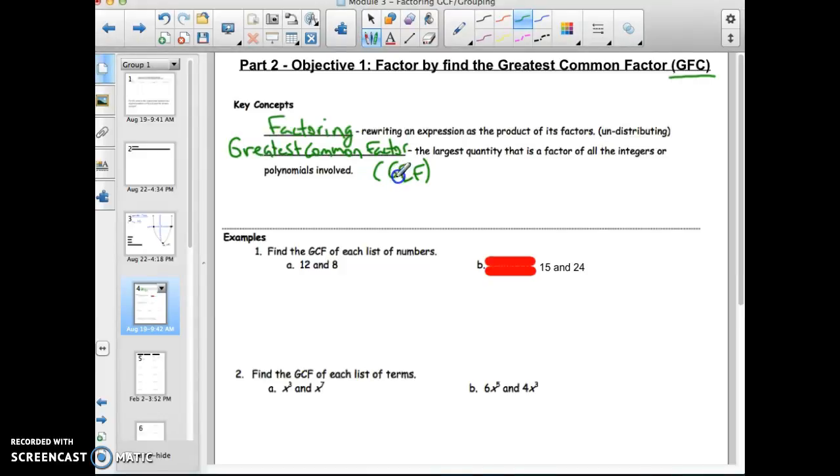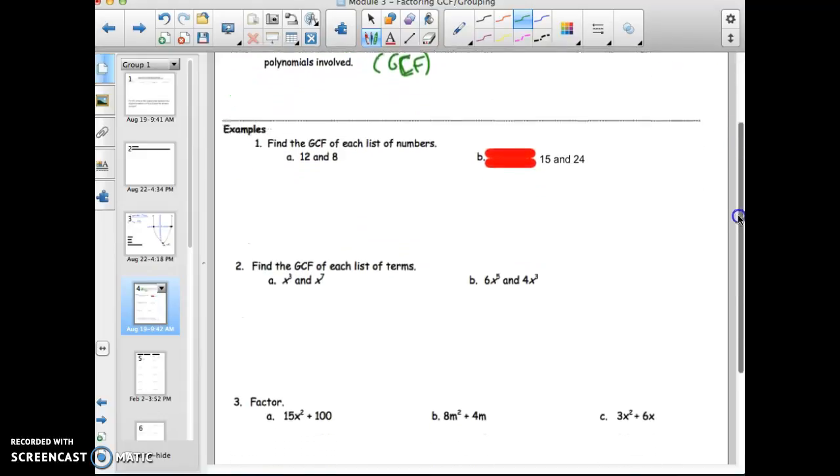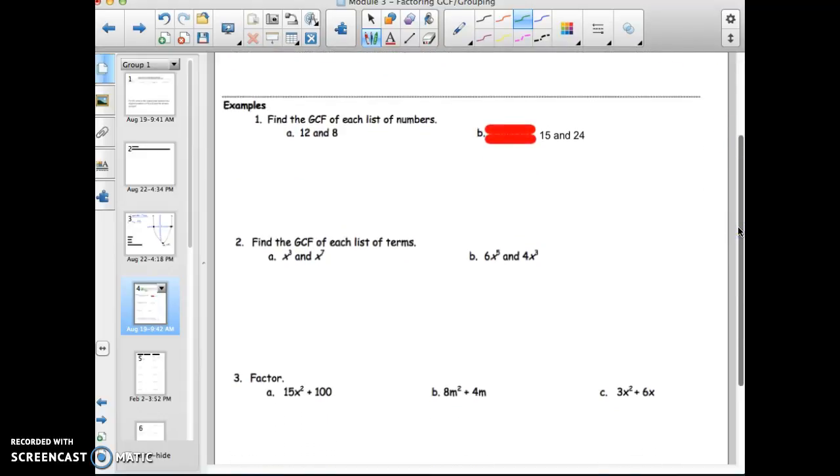So if I was going to model example one and then example two, it says to find the GCF of each list of numbers. Now you'll hear me say the word term a lot. So we can consider twelve and eight to be terms.